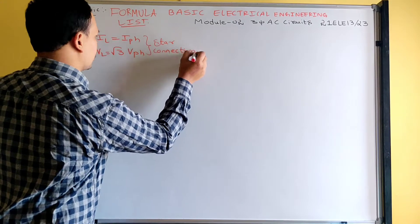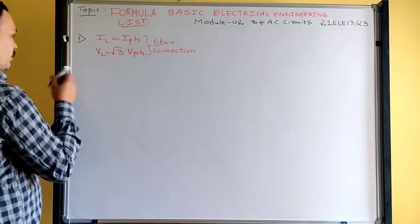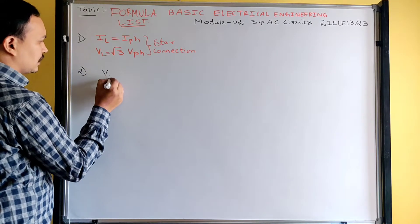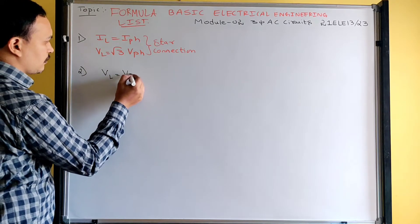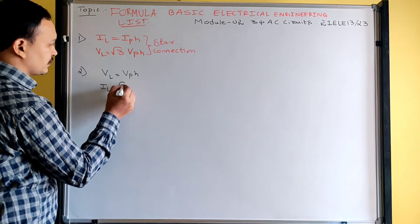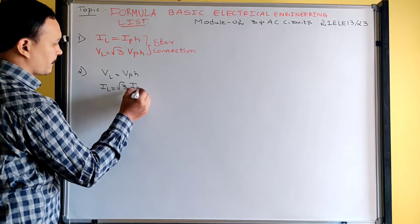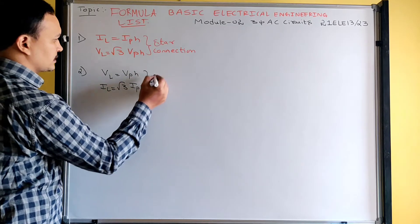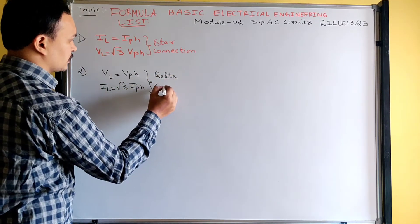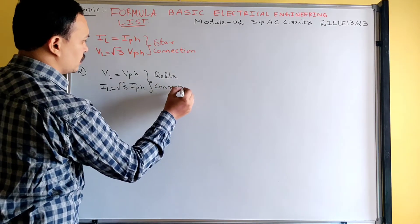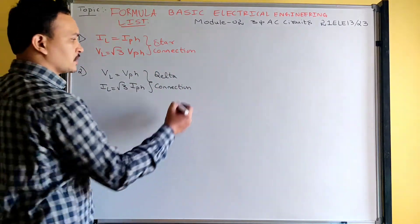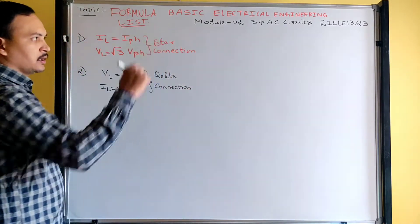Second formula: for delta connection, line voltage is equal to phase voltage, and line current is root 3 times of phase current. This is valid for delta connection. If you don't know these relations, you cannot solve problems — it means you don't know anything about the concept you have learned in three-phase AC circuits.